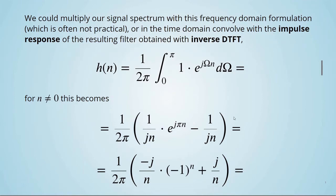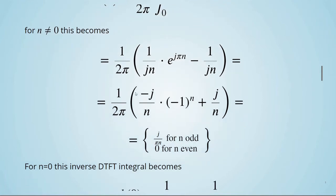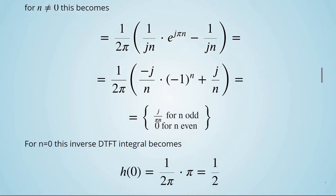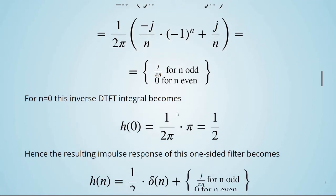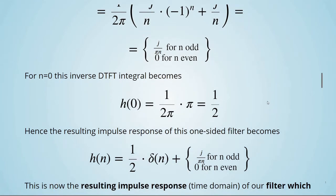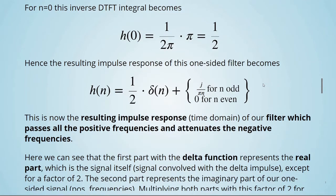For n is not 0, this becomes j divided by πn for n odd and 0 for n even. For n equals to 0, this inverse DTFT integral becomes H(0), which is 1 divided by 2π times π equals 1 divided by 2. Hence, the resulting impulse response of this one-sided filter becomes 1/2 times δ(n) plus j divided by πn for n odd and 0 for n even. This is now the resulting impulse response, the time domain of our filter, which passes all the positive frequencies and attenuates the negative frequencies.